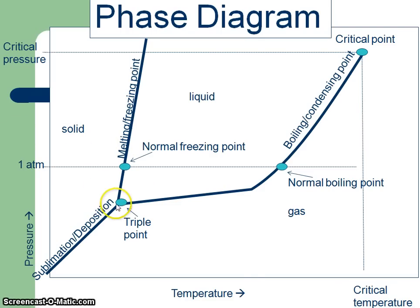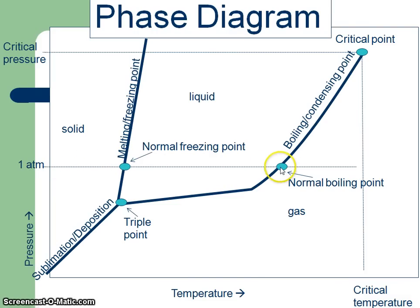This triple point here is important because that's a point at which solid, liquid, and gas all coexist. This point coming across at one atmosphere is known — when it hits this line — as the normal freezing point, and when it hits this line as the normal boiling point. It's just going right across at one atmosphere, where that one atmosphere intersects those lines.